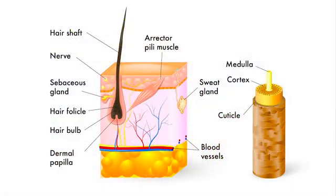Then we have the layers of the hair shaft. As hairdressers, this is probably the most important thing that we need to know with hair, as we don't delve into cutting into the skin or anything like that. The three layers of the hair we need to know are the cuticle, which is the outside layer, then we have the cortex, which is the middle layer.